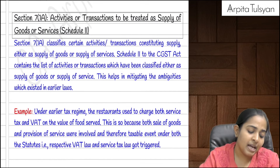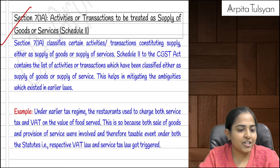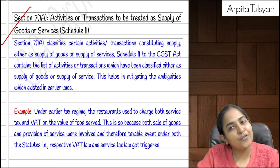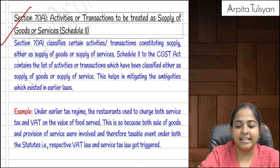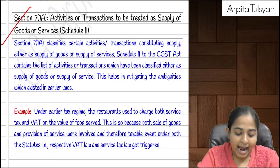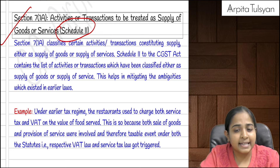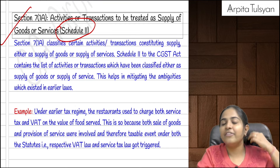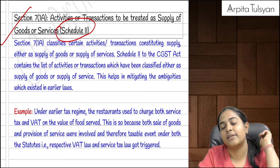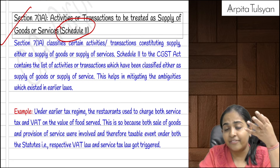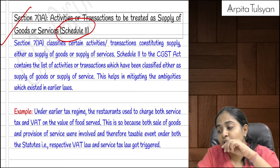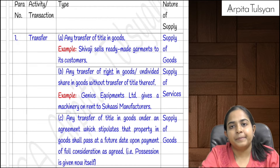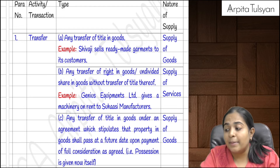Section 7(1)(a) — a very simple section — talks about classification of a transaction into supply of goods or supply of services. Now that we know it is a supply, we need to bifurcate whether it is supply of goods or supply of services. These transactions are listed in Schedule 2. Schedule 1 was about deemed supply — even without consideration, if done in the course of business, it is a supply. Schedule 2 does not determine whether it is a supply; it just bifurcates between goods and services.